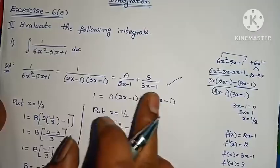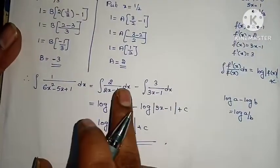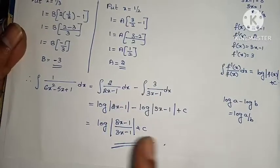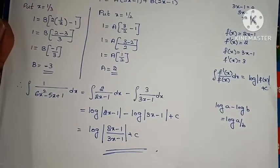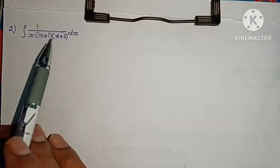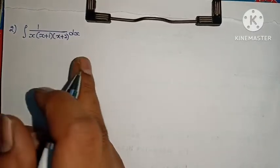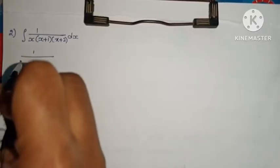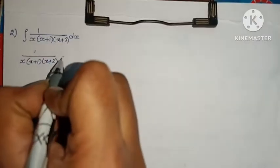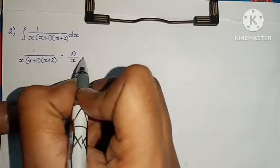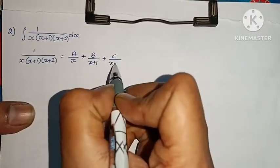So the steps were: first factor, then convert to partial fractions, then find A and B values, then substitute and integrate using the log formula. Next problem: integral of 1 by [x(x plus 1)(x plus 2)] dx. Factors are already given. Write partial fractions as A by x plus B by (x plus 1) plus C by (x plus 2).